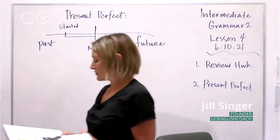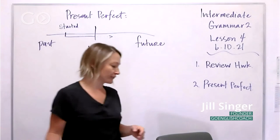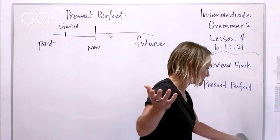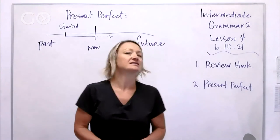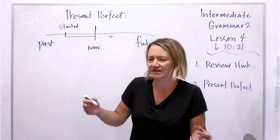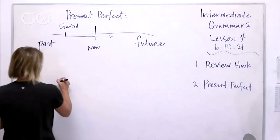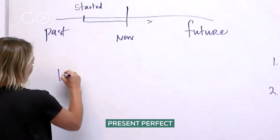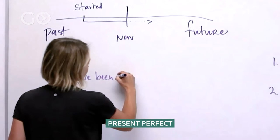So the first thing to talk about is when do we use the perfect tense. Let's first talk about some examples of the perfect tense. What is the present perfect? Present perfect is 'I have been teaching for 15 years.'